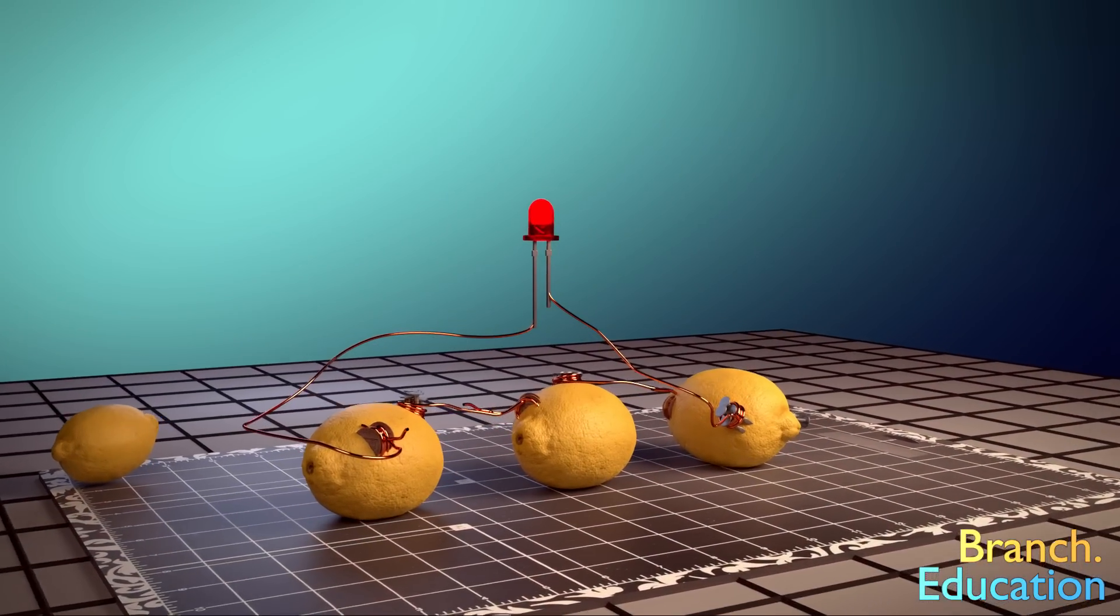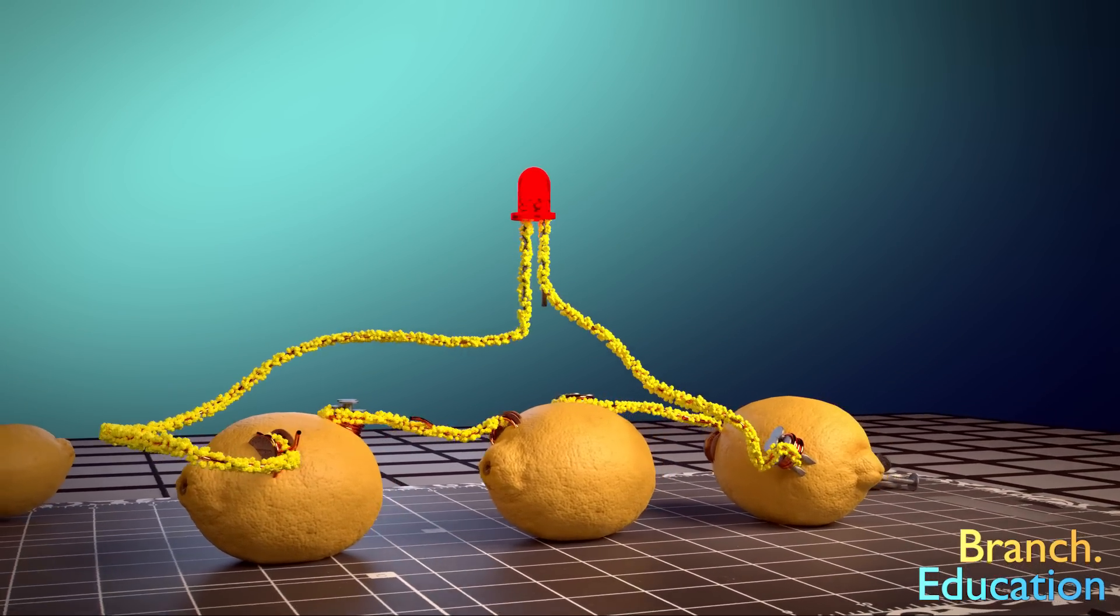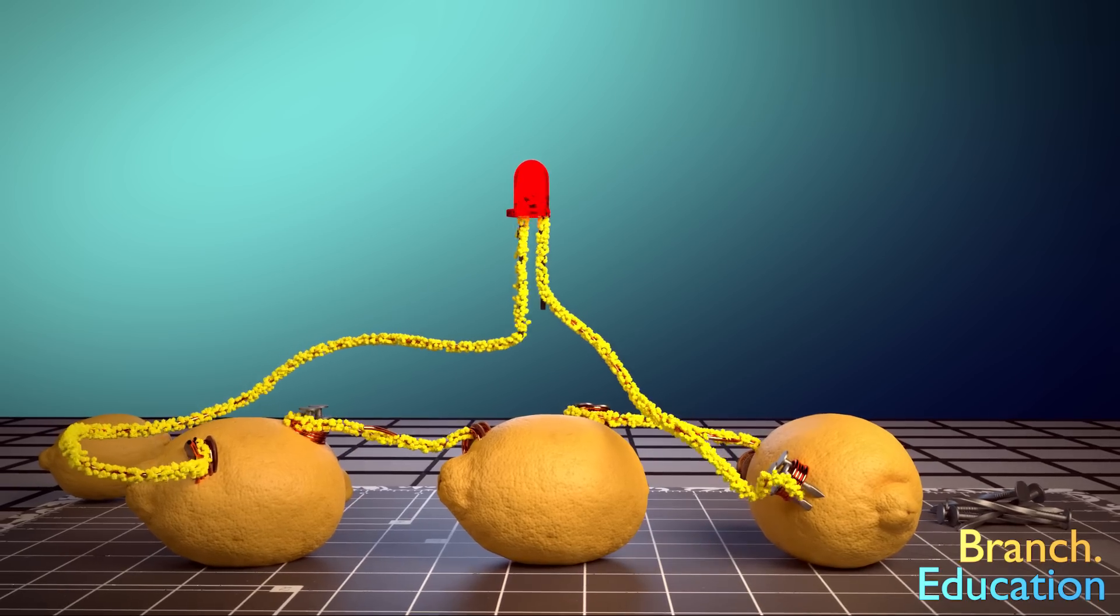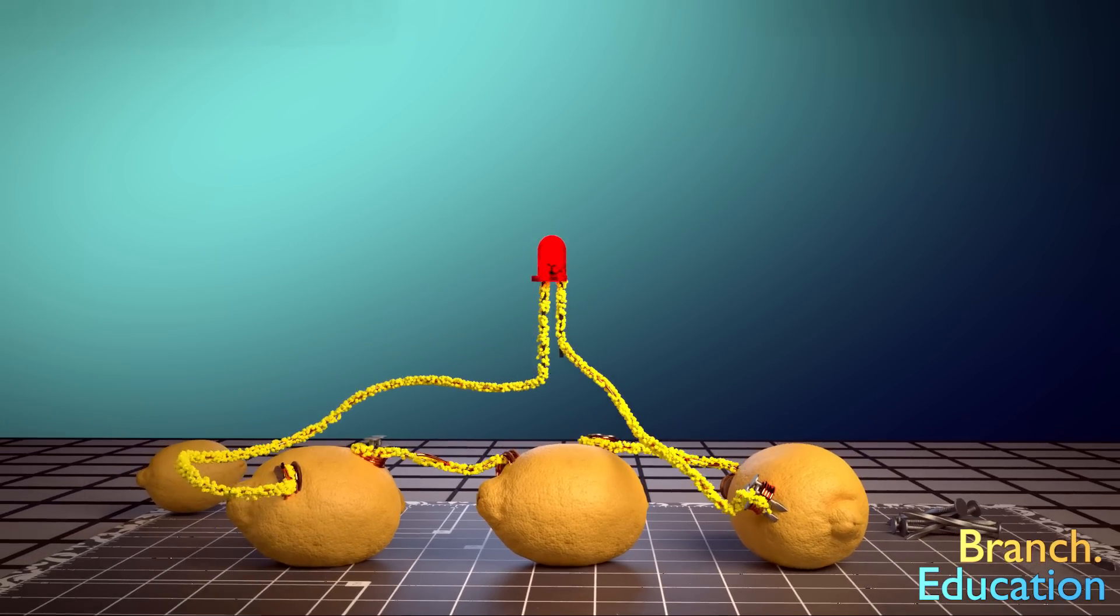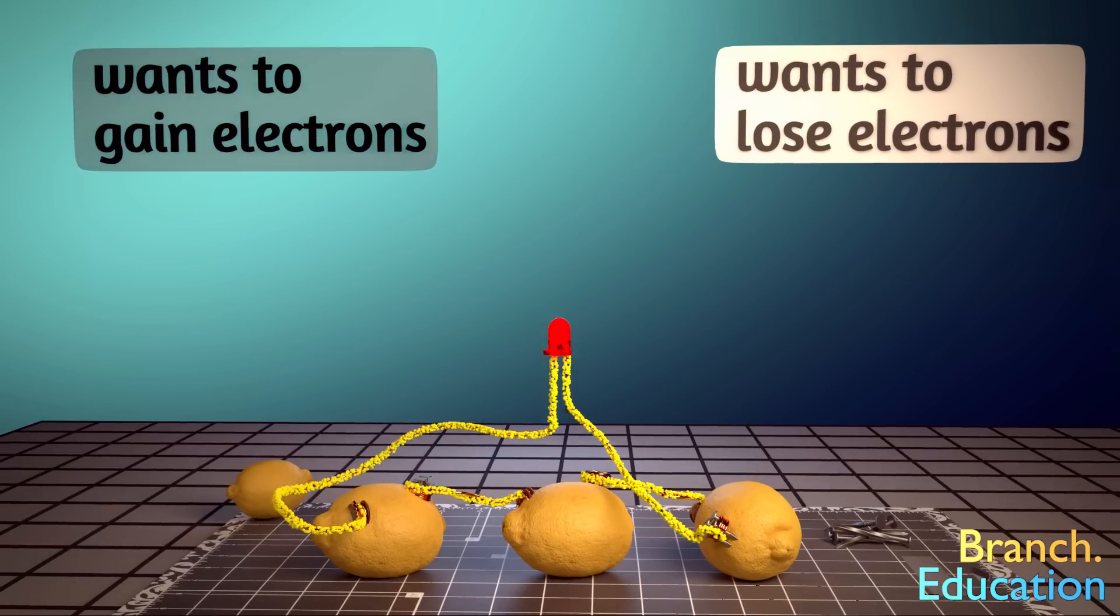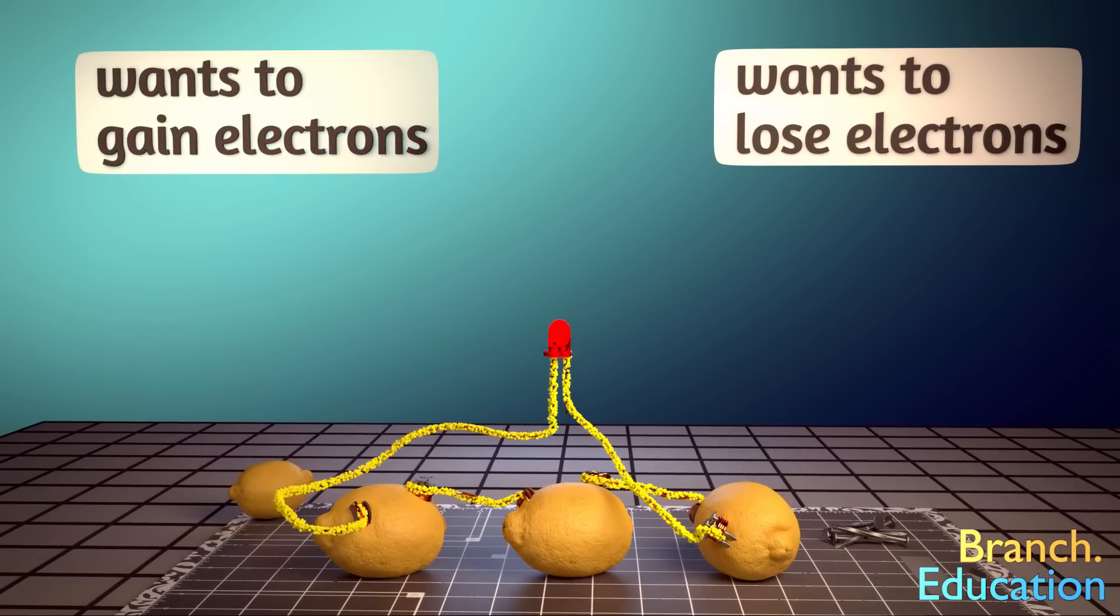To start, electricity is a flow of electrons, and as in any battery, this flow is caused by the interaction between two materials, one that wants to lose electrons, and one that wants to gain electrons.